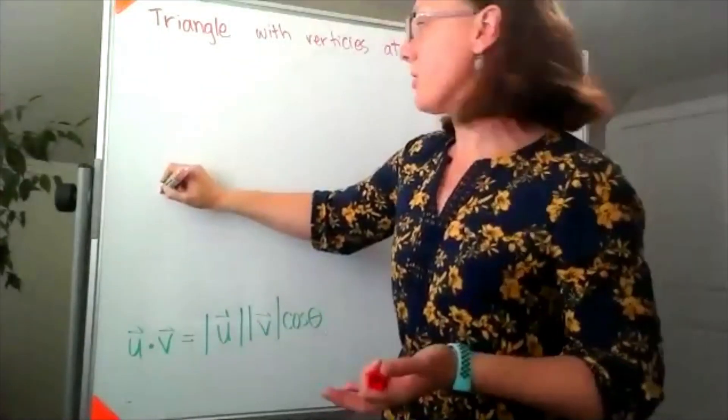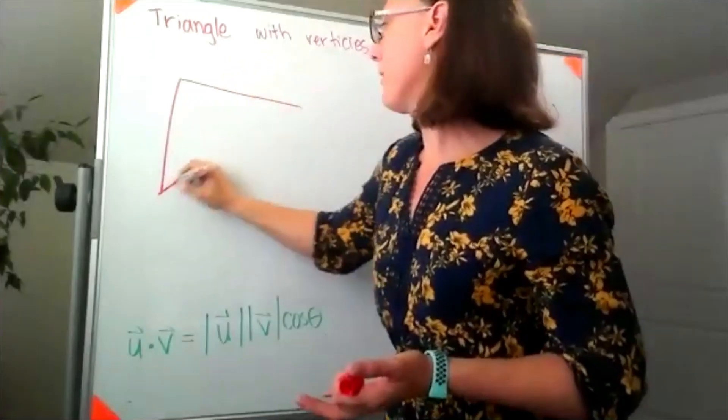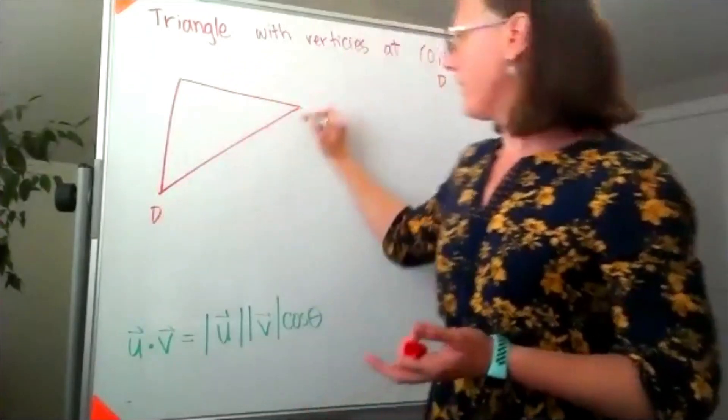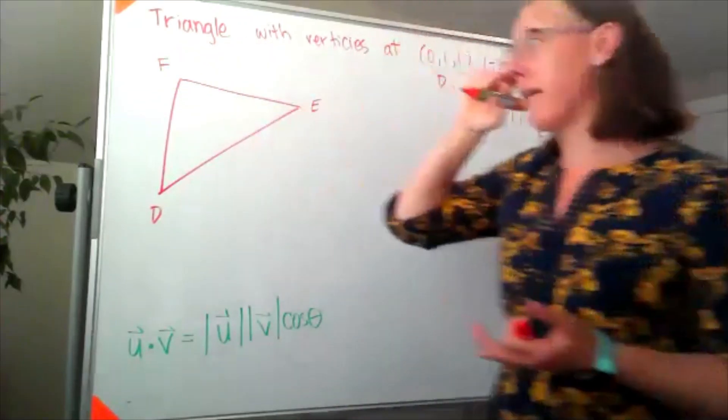So I know it's going to be a triangle, I'm just going to draw a triangle and I will label those points D, E, and F.